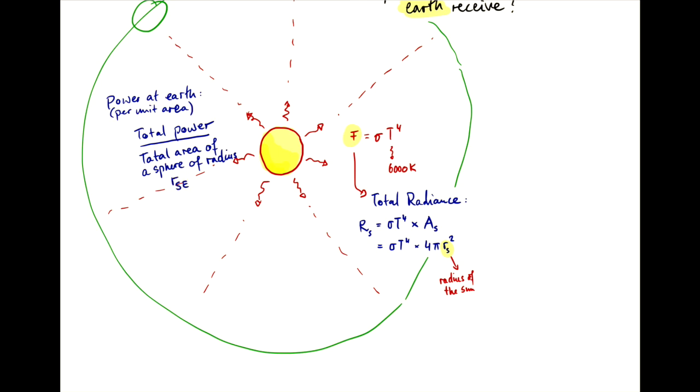radius of the Earth's orbit. Let's call that radius SE, Sun-Earth. So this area here is obviously 4 pi r_SE squared.